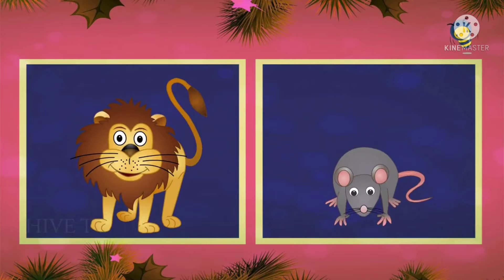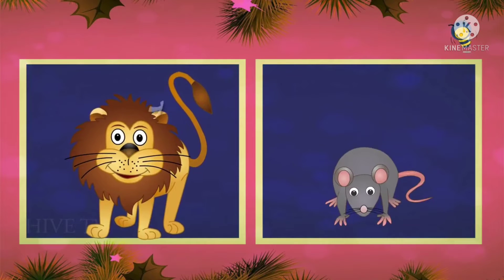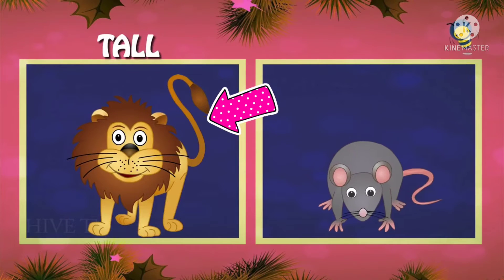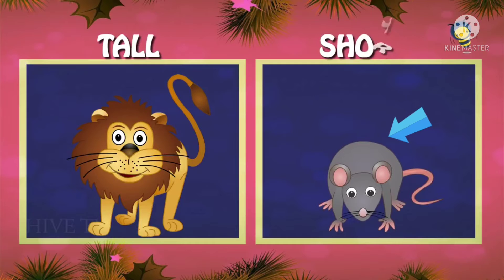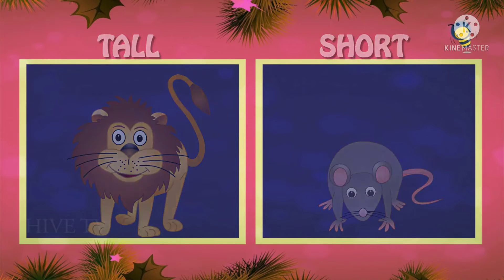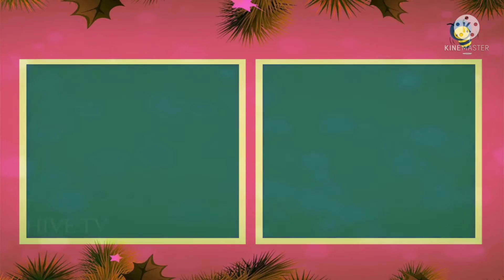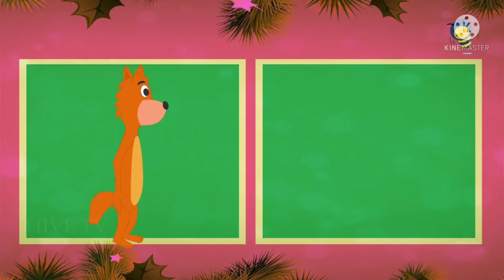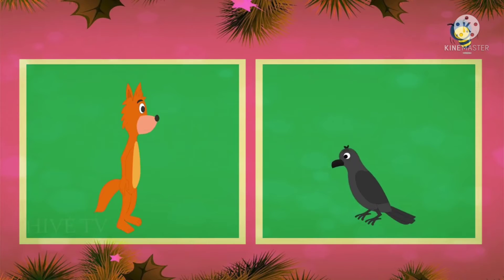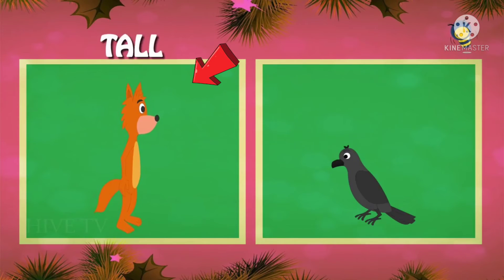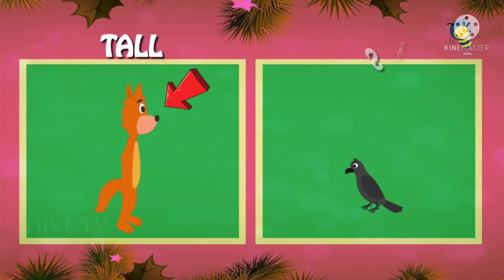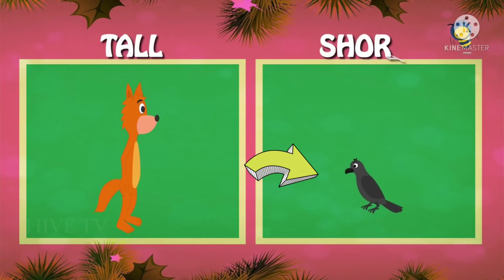Now come lion and rat. Lion is tall and rat is short. Very good. Keep it up. Dog and crow — dog is tall and crow is short.